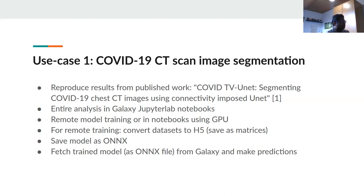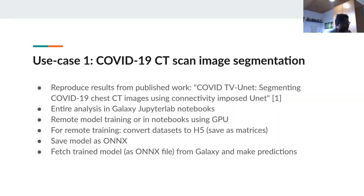This entire paper can be reproduced in our infrastructure and similar accuracy can be attained. The analysis can be run in two ways: directly in Jupyter Notebooks, or using the remote model training feature, which runs on CPU or GPU and creates models in Galaxy history. For remote training, we need to convert the datasets to H5 format. All neural networks and machine learning algorithms take input data as matrices, so to standardize data transfer to Galaxy, all datasets should be converted to H5. These H5 files can be uploaded from the notebook by running a function.